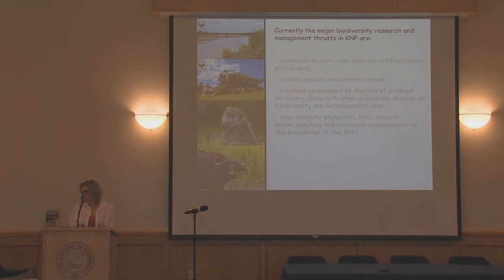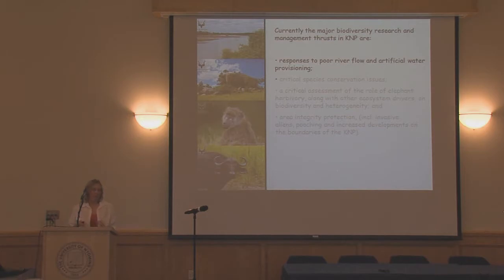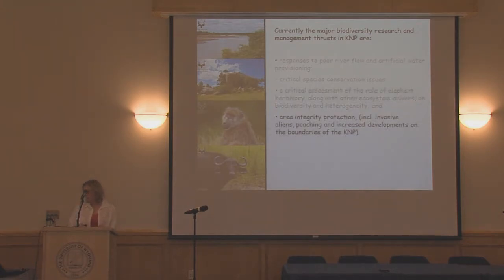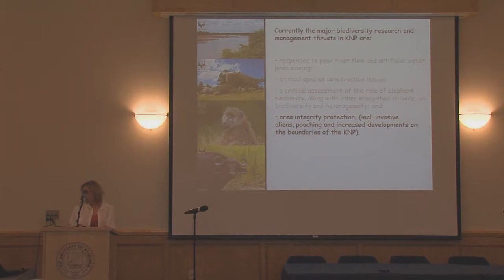To summarise, our SANParks scientists' main research thrusts are: the response to poor river flow and artificial water provisioning; critical species conservation issues; a critical assessment of the role of elephants alongside other ecosystem drivers — we actually have a separate elephant management plan because elephants have such a large impact in a fenced park; and lastly, area integrity protection, which includes a scientist working only on invasive species, our entire anti-poaching unit, and addressing the increased pressure from outside the park.